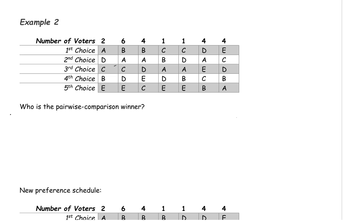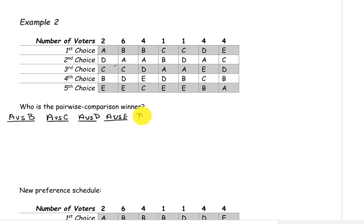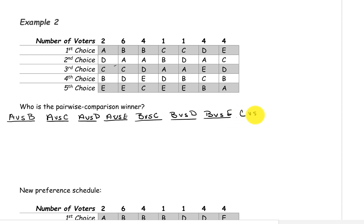First we have to start off by pairing each of the candidates up with each other. We'll start with candidate A versus B, A versus C, A versus D, and A versus E. Next, candidate B — we've already paired B with A, so B versus C, B versus D, and B versus E. Then candidate C — we've already paired C with A and B, so C versus D and C versus E. And lastly, candidate D versus E.